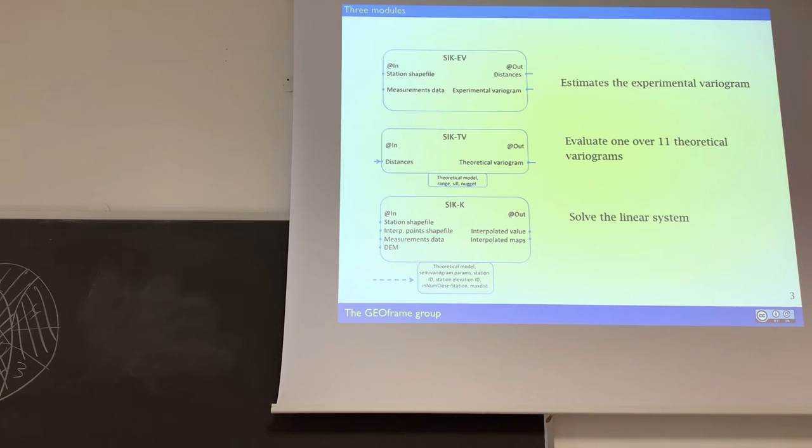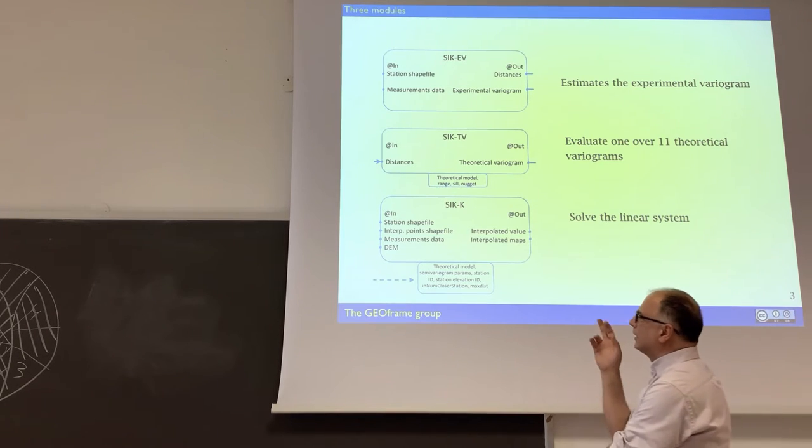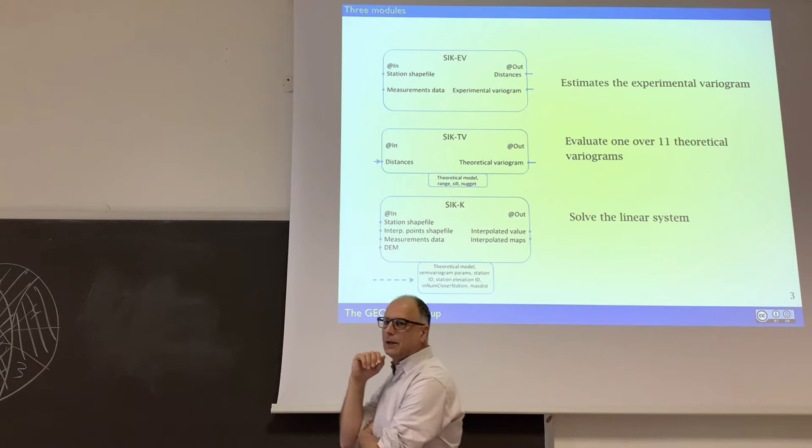Then we have 6pb, which is the theoretical variable. It is the one that takes the output from the experimental variable and fits a theoretical variable. And then finally, we have 6k with just the solver of the linear equation.